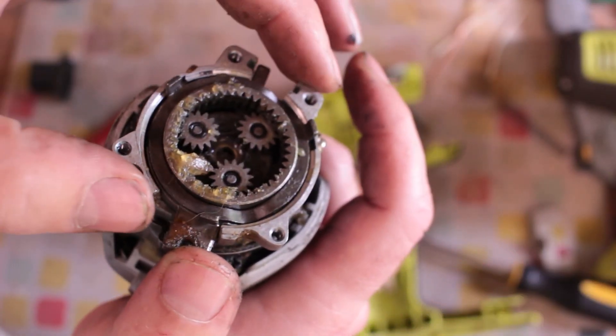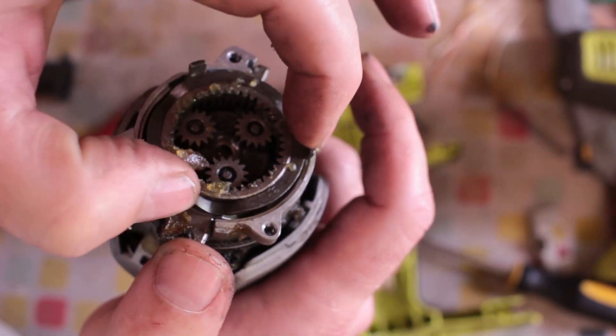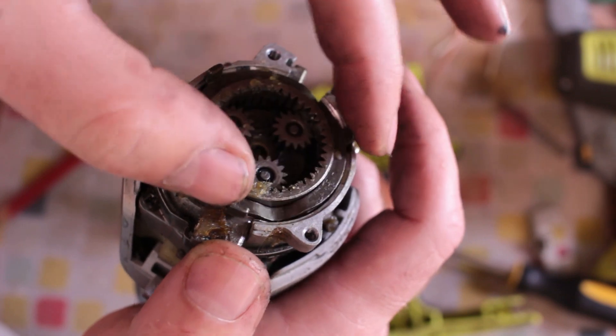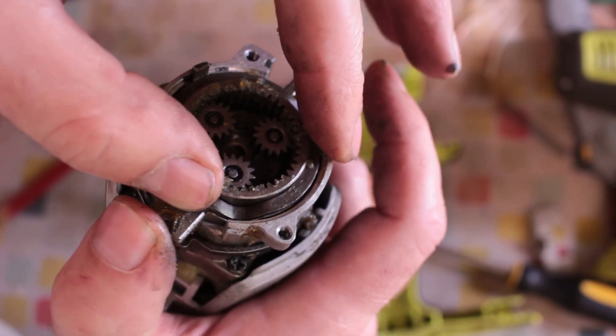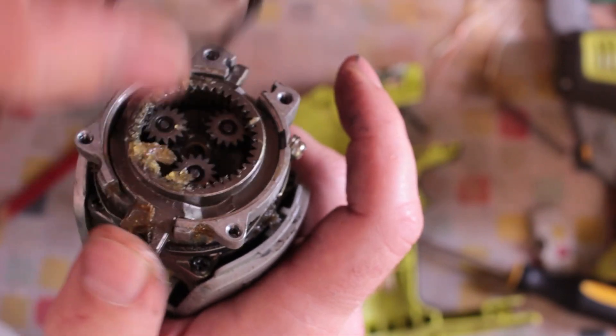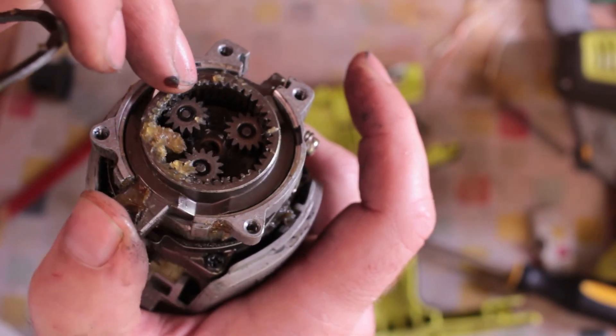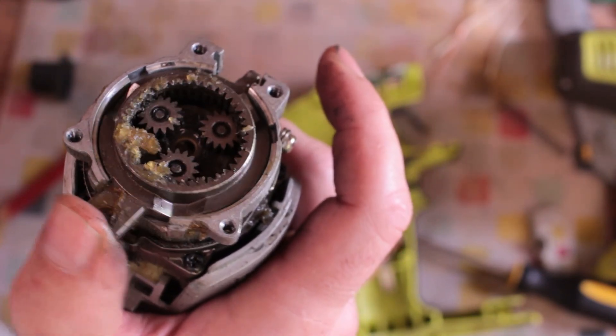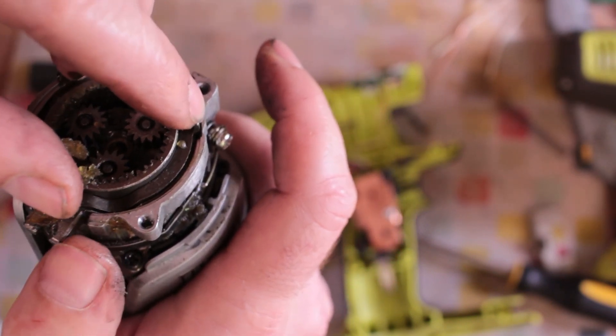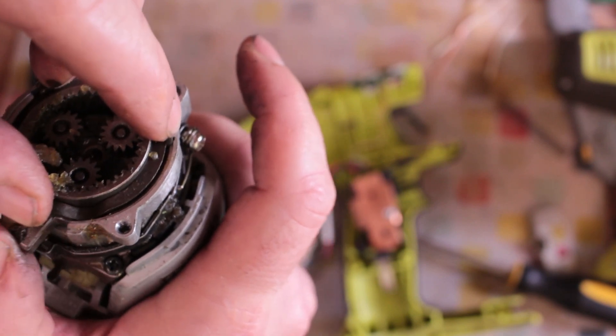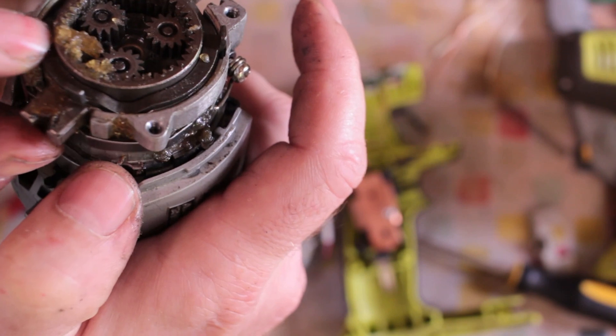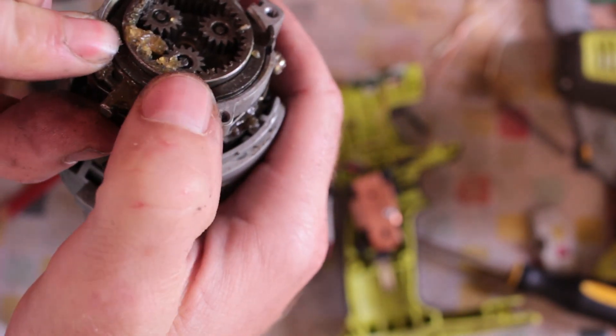So I haven't quite figured out how this is supposed to work. I think it's supposed to ride up and down these ramps. And when there's torque applied, because this is the ring gear here, when there's a lot of force, I would assume that would do something and auto shift it.